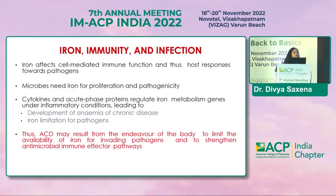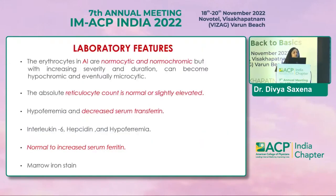Iron is related to immunity and infection as well. It affects cell-mediated immune function and thus host responses towards pathogens are also affected. Microbes need iron for proliferation and pathogenicity, where cytokines and acute phase proteins regulate iron metabolism genes under inflammatory conditions, finally leading to development of anemia of chronic disease or iron limitation for pathogens. ACD may result from the body's endeavor to limit the availability of iron for invading pathogens and to strengthen antimicrobial immune effector pathways inside the body.